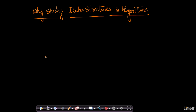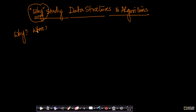Before we go ahead and learn actual data structures and algorithms, we need to understand why we are even studying this subject. It's very important to ask these critical questions: why are we studying this subject? Where are all the learnings going to be applied in the real world? Understanding these key aspects will give you more appreciation of what you're learning and also more context.